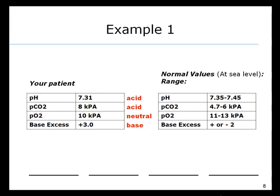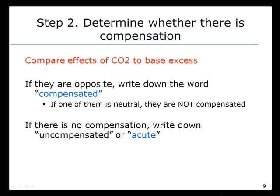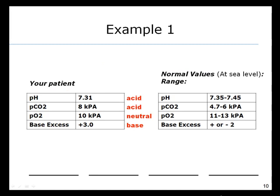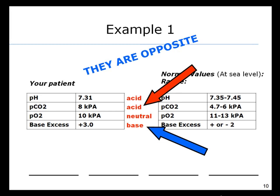Step two is to determine whether there is or is not compensation. We compare the effects of the CO2 to the base excess. If the effects of CO2 and base excess are opposite, we write down 'compensated.' If one of them is neutral, they are not compensated, and we write down 'uncompensated' or 'acute.' Here, the CO2 effects are acidic and the base excess effects are base — these are opposite — which means there is indeed compensation.